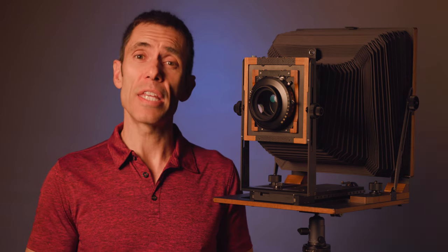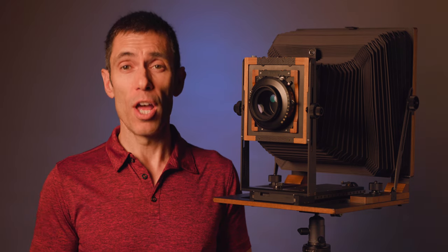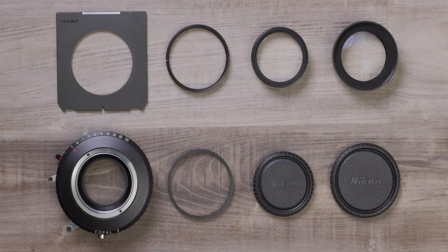Only the Fujifilm Fujinon C 450 millimeter f12.5 lens can boast being significantly lighter with an even larger image circle of 486 millimeters.